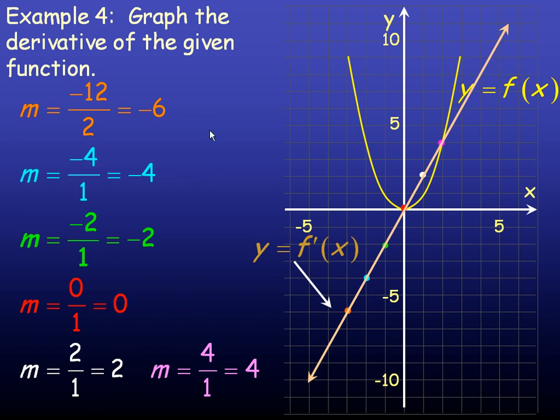The original parabola was y equals x squared, and this is actually the line y equals 2x. 2x is the derivative of x squared. And that's the end of the lesson.